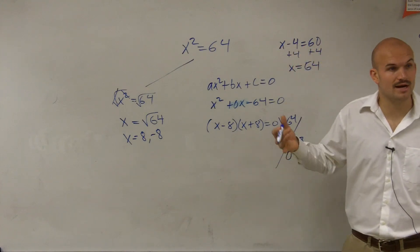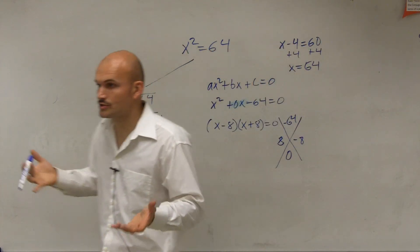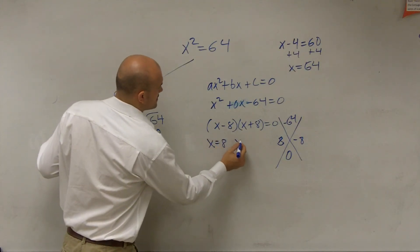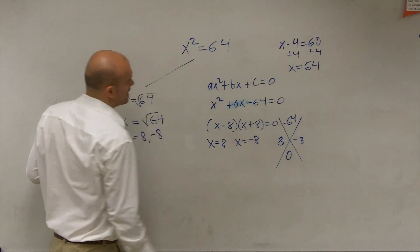Then, remember, by the 0 product property, whenever you have two factors or two numbers multiplied to give you 0, you can say x equals 8 or x equals negative 8.